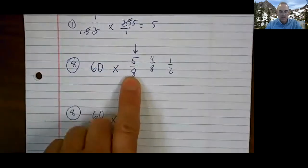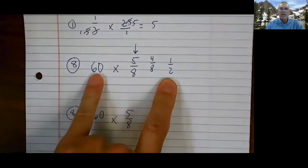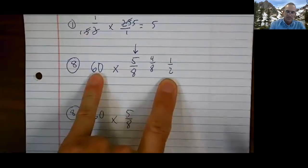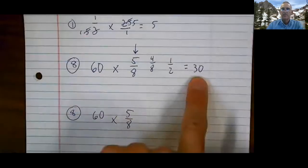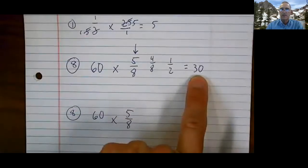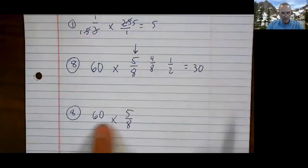Then I know that four eighths is the same as one half. So I went from here to here. What is one half of 60? 30. There's an estimate. I like that estimate. That's a good estimate there.